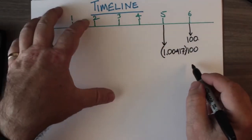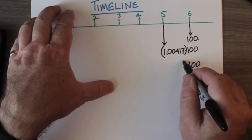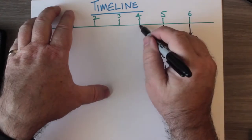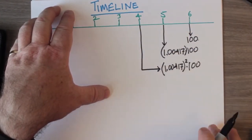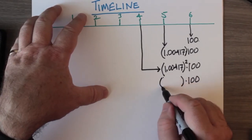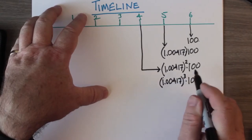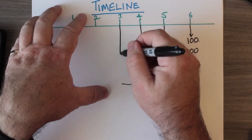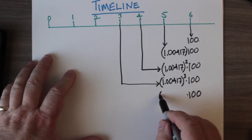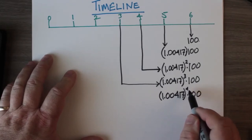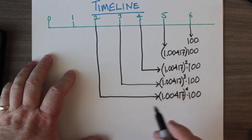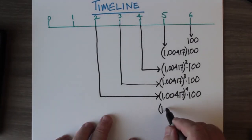Each month Ron adds $100 more to his principal, so a separate interest calculation applies to each payment. The common ratio r is 1 plus 0.00417, which equals 1.00417. We multiply each month's $100 investment by this ratio raised to a power: one month gives one month's interest, two months gives it squared, and so on. On the timeline, month six is right at maturity so no interest is calculated there, and payments occur at the end of each compounding period.